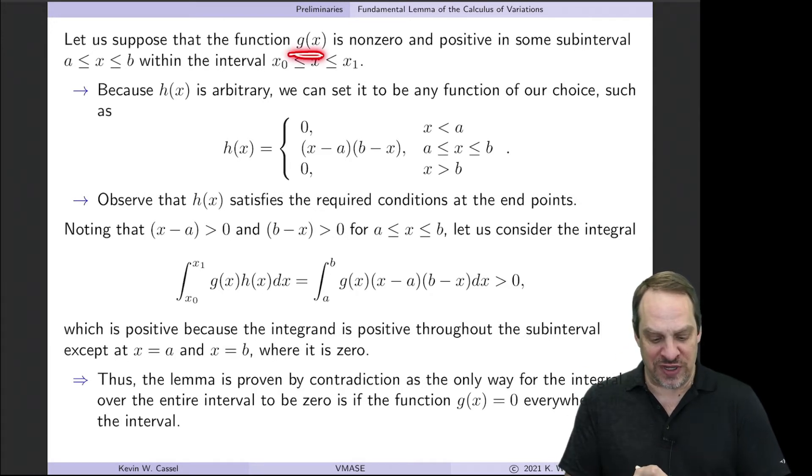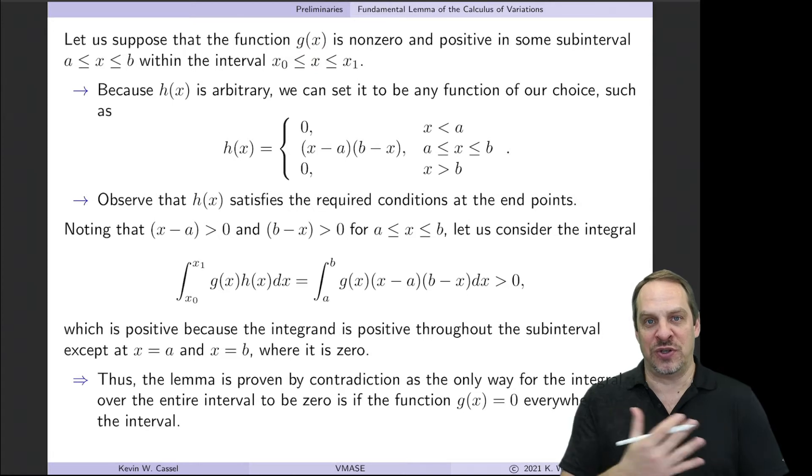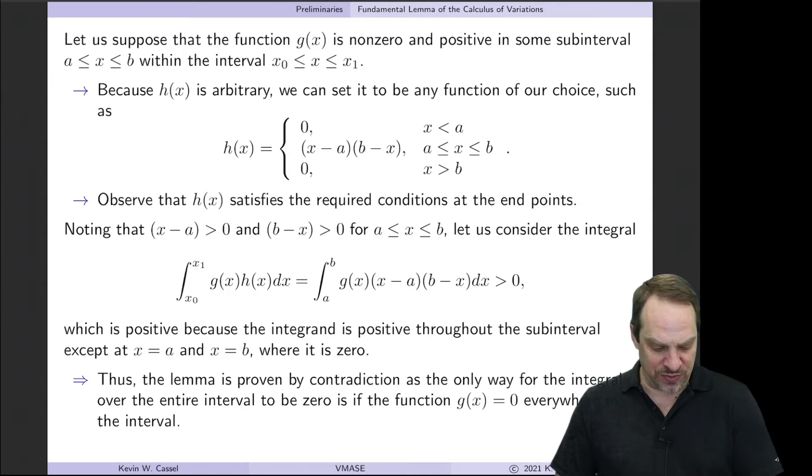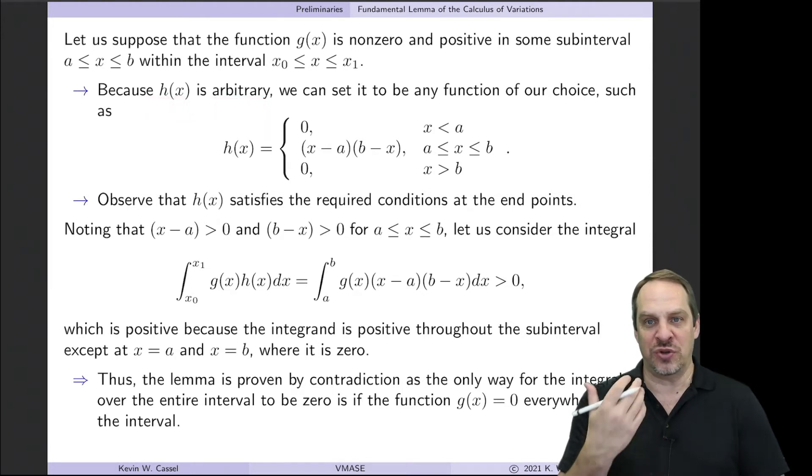In other words, we'll show that g(x) has to be equal to 0 across the entire interval. The whole key is the fact that h(x) is an arbitrary function. So we don't know what h(x) is. It can be any function.